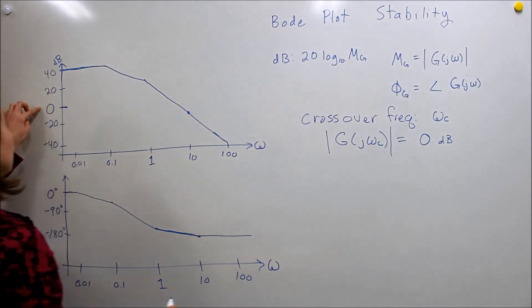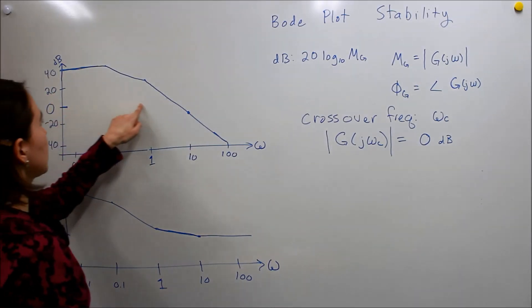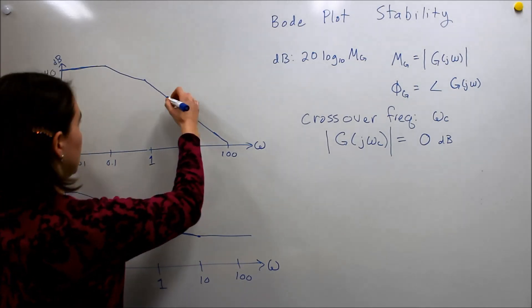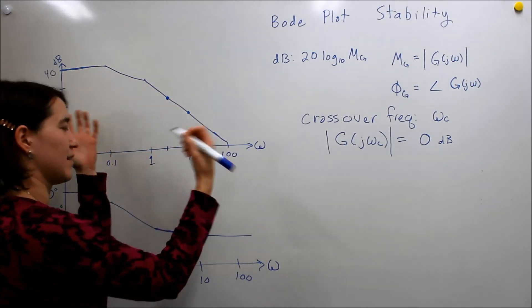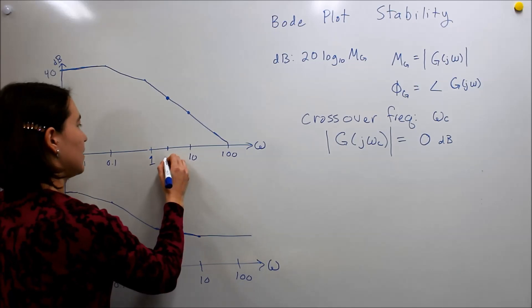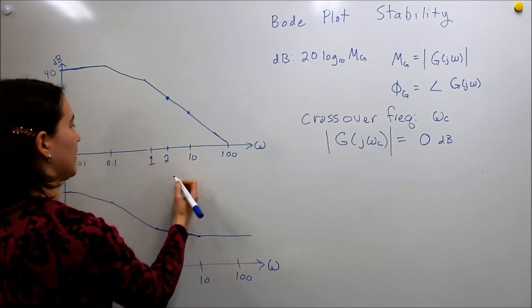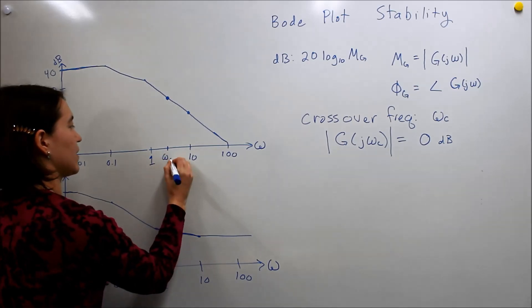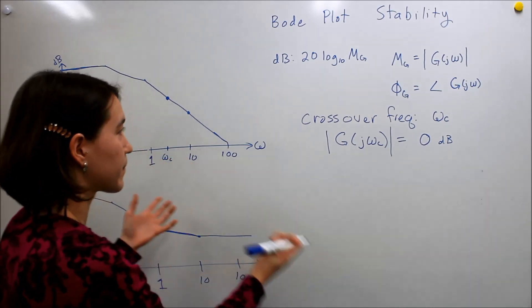If we look at zero dB, we pretty much track this point, find it's approximately here. We can approximately say that's around two-ish, so this is our omega c. Well, we'll just label it with omega c. Alright, so that would be our crossover frequency.